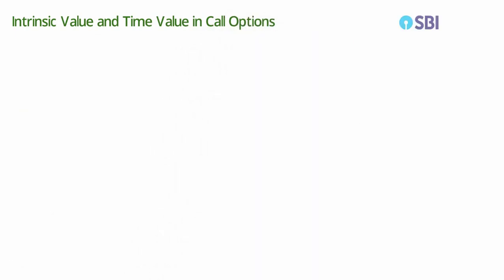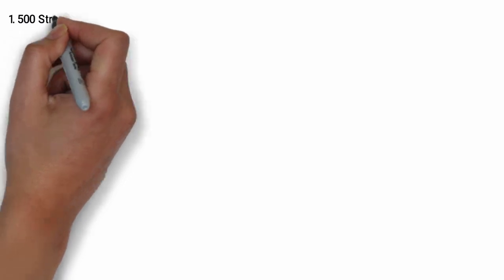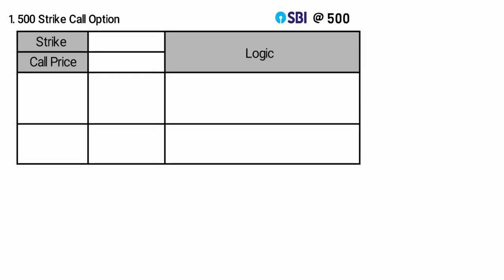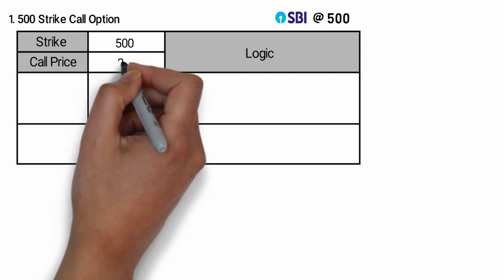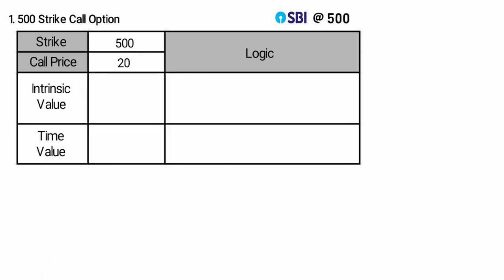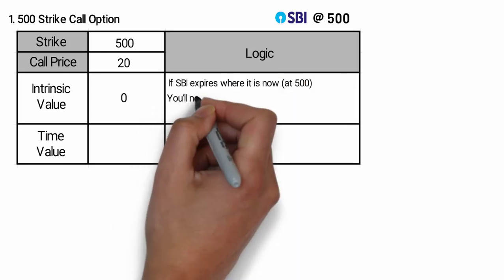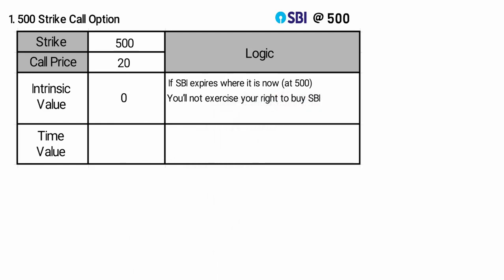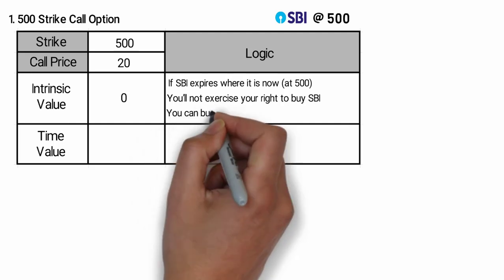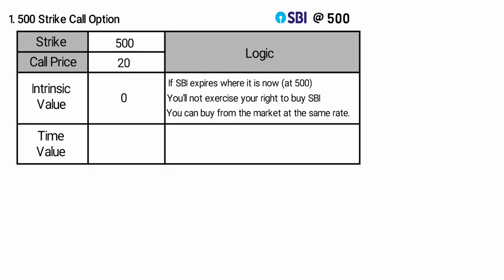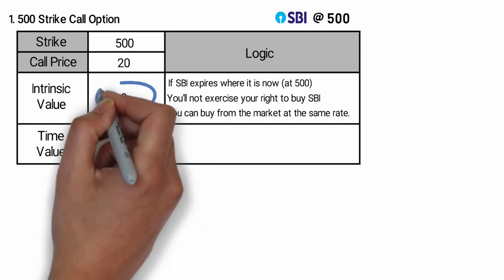SBI is trading at 500 rupees. Look at these strikes and their option prices. Number one: the 500 strike call option. This option gives you the right to buy SBI at 500. The strike is 500 and the call option price is 20 rupees. Here the intrinsic value is zero. Why? Because if SBI expires at the current market price of 500, you will not exercise your right to buy SBI at 500 since you can buy from the market at the same rate. This makes the option worth nothing if SBI ends at 500 on expiry. That's why the intrinsic value is zero.